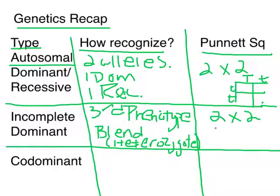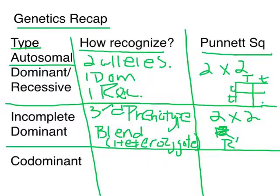Your Punnett Square is still a two by two, but your alleles are going to be R and R prime — or R and W — something like that. So you'll have those alleles labeling the Punnett Square.